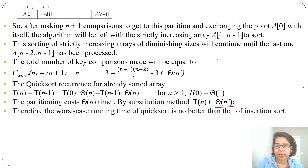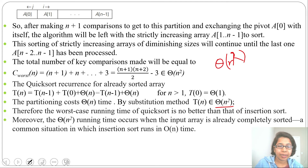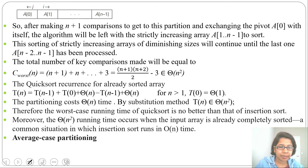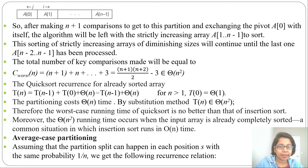Insertion sort's worst case running time is θ(n²), and QuickSort's worst case is also θ(n²). Interestingly, θ(n²) running time occurs for QuickSort when the input array is already sorted, while for insertion sort, an already sorted array is the best case — θ(n). So a sorted array is the best case for insertion sort but the worst case for QuickSort.